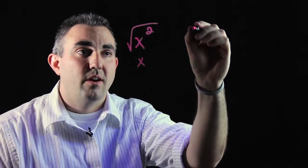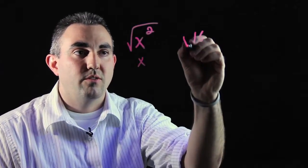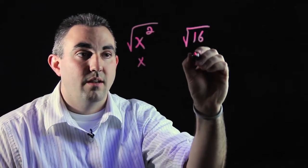Same with numbers that are perfect squares. If you have 16, how do you get 16 as a perfect square? Use 4 times 4. So the square root of 16 is 4.